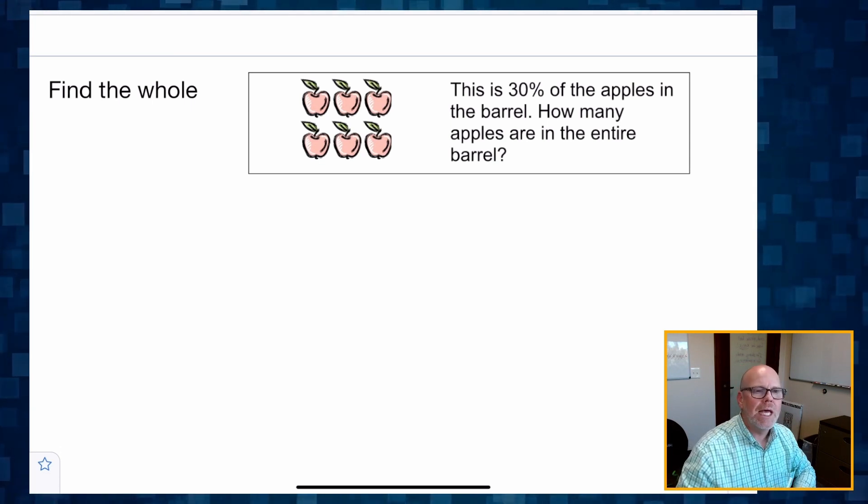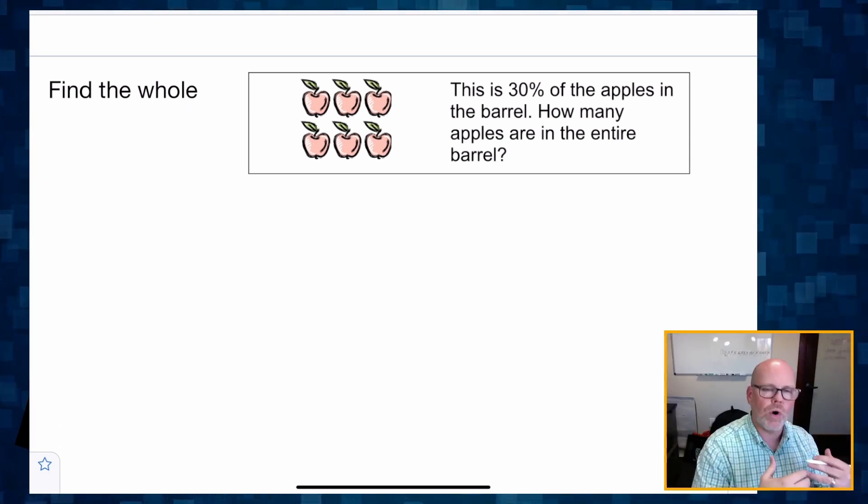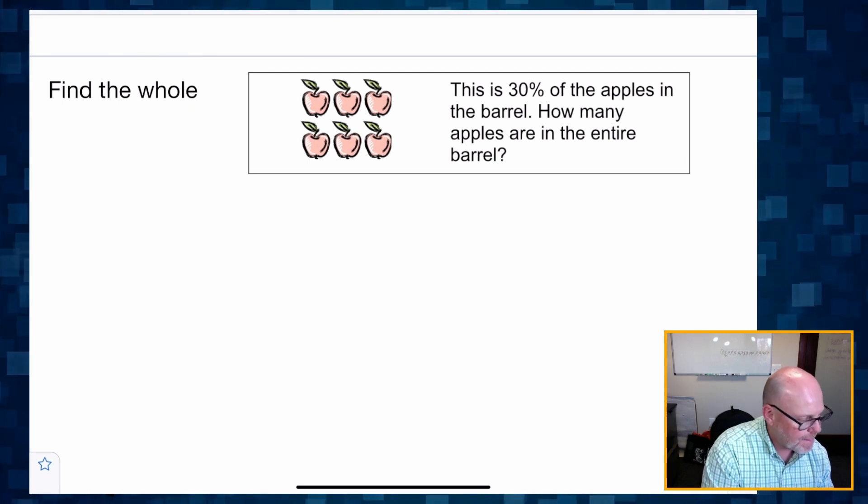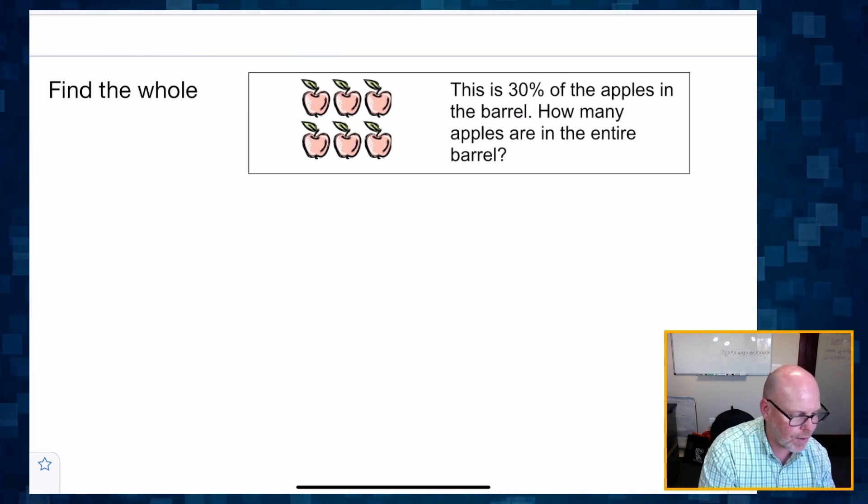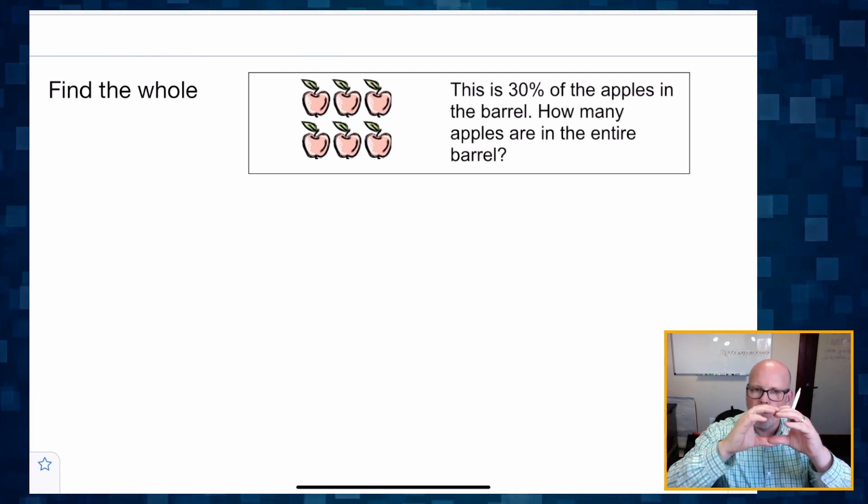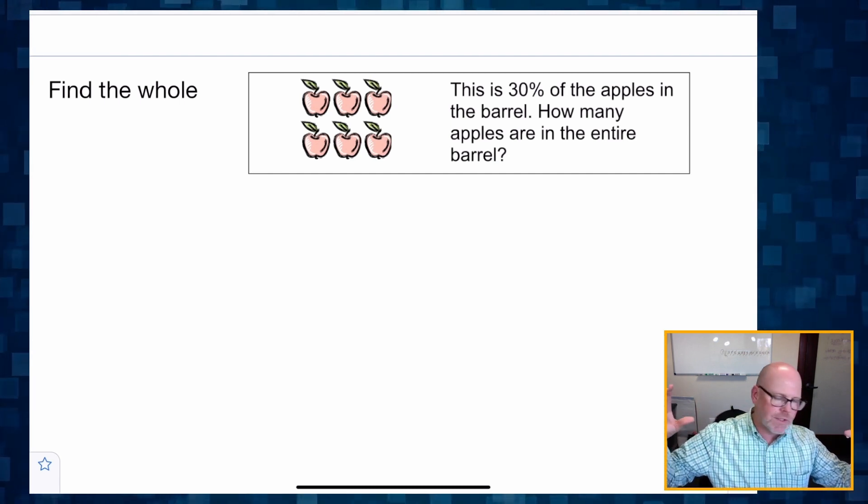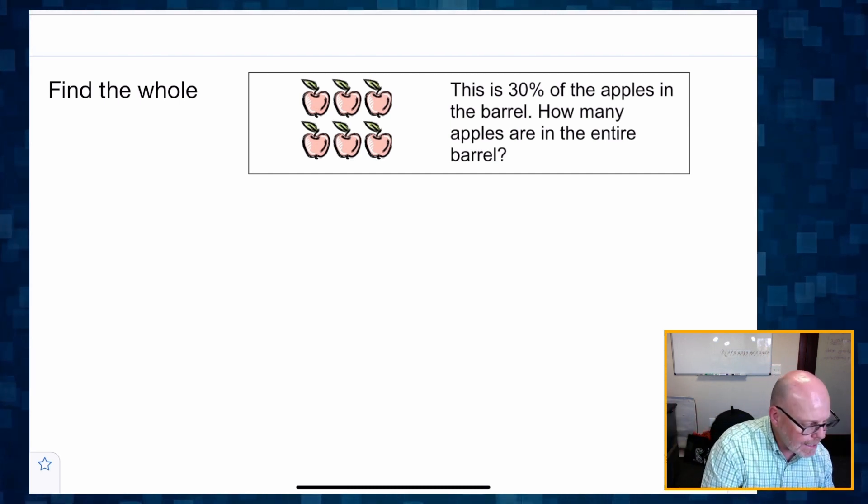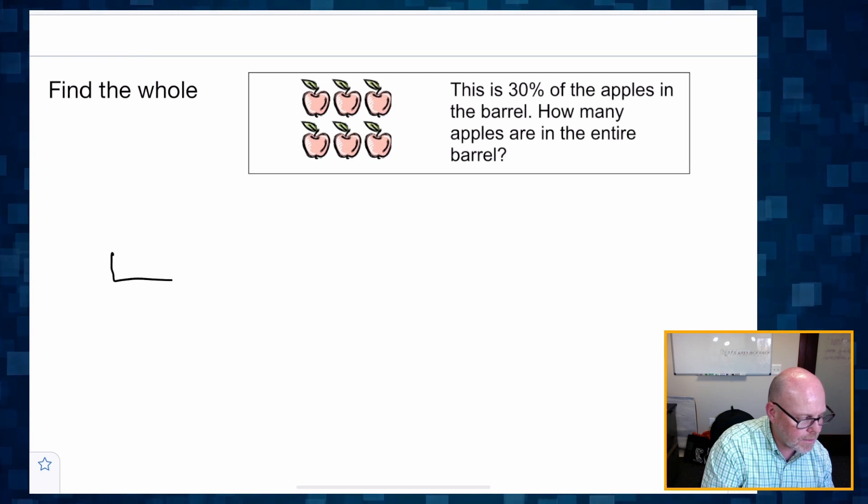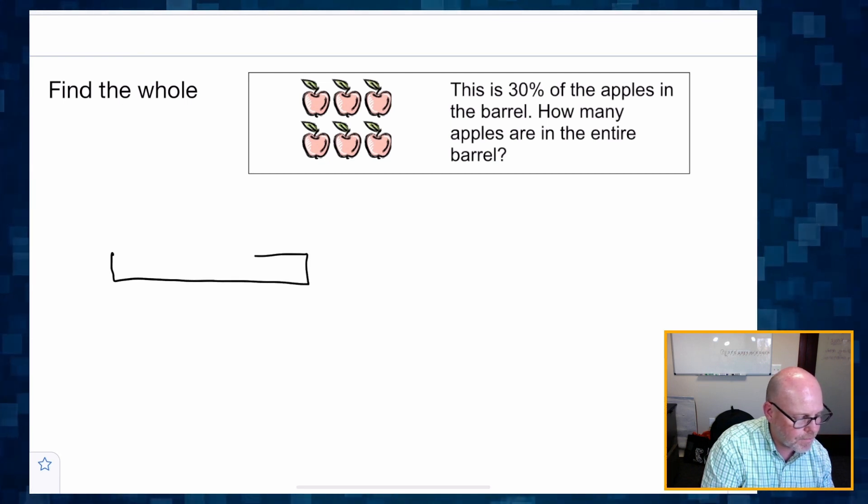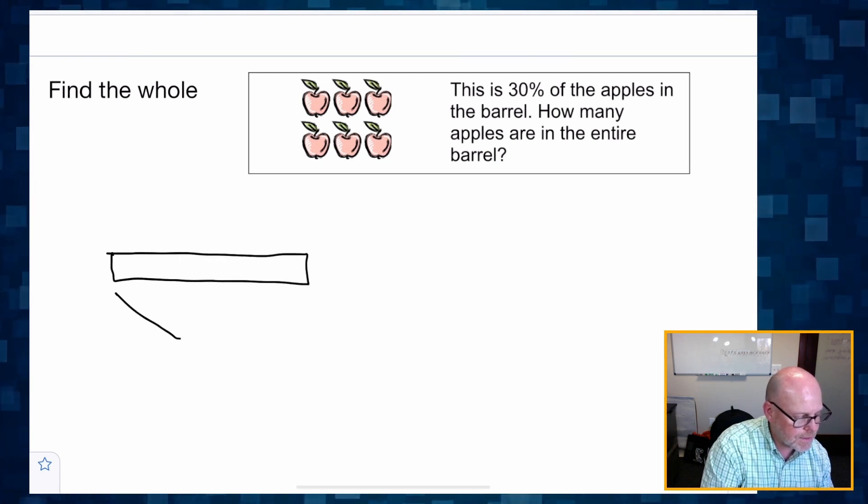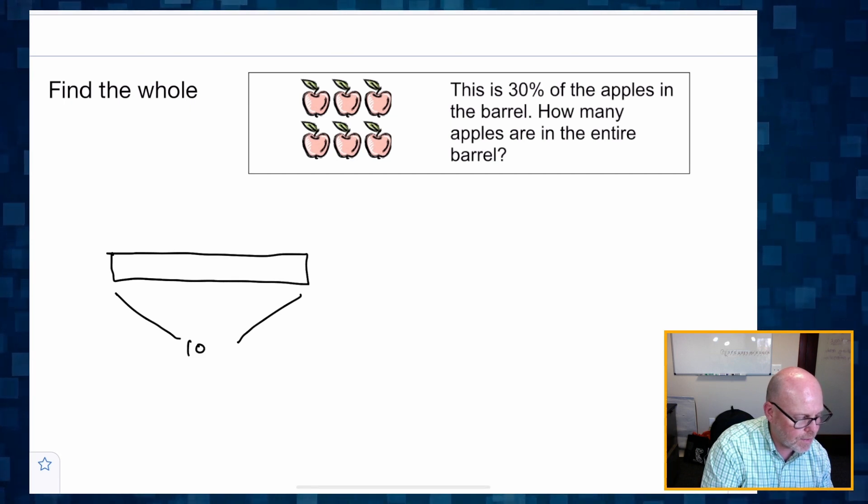So the first thing we're going to want to do is we're going to want to draw a tape diagram that represents this story. So again, we're almost always, I don't know if there's ever an exception. We're going to begin by thinking about the tape and representing that as 100%.